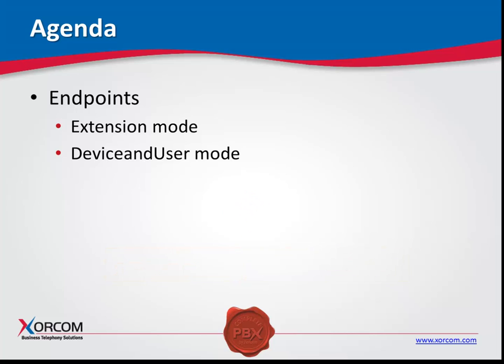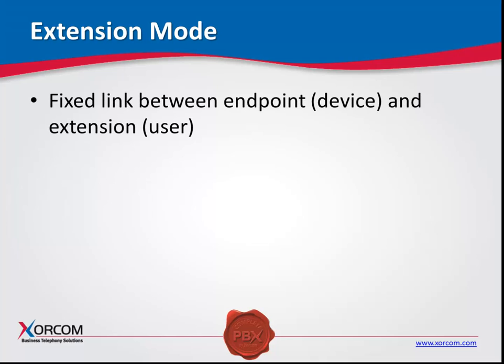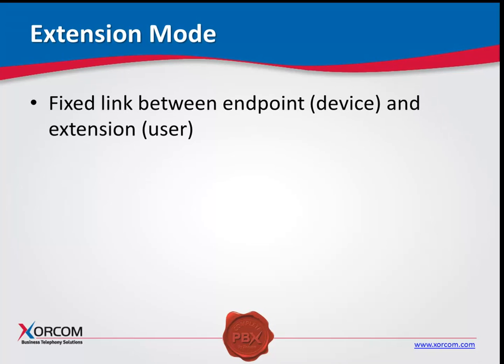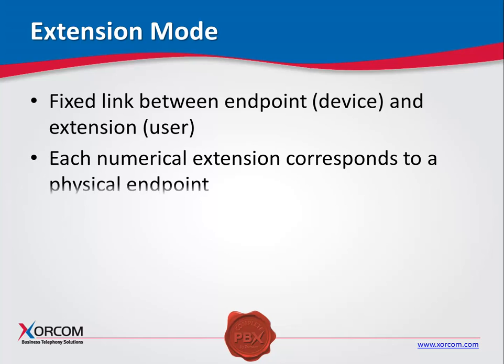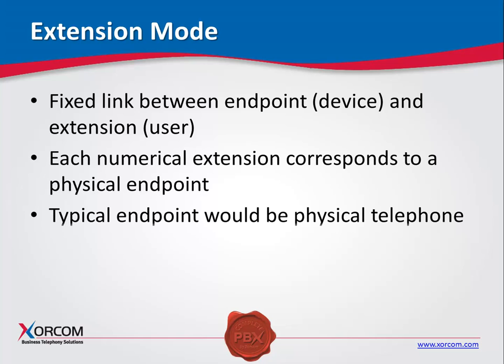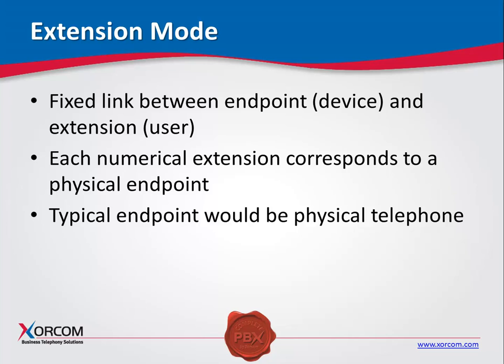Extension mode is for systems in which you want a fixed line between the endpoint and a specific user extension. In this mode, the numerical extension will always correspond to the same physical endpoint. The endpoint is always assigned to a fixed device in the system, such as a fixed FXS channel or a fixed SIP channel.